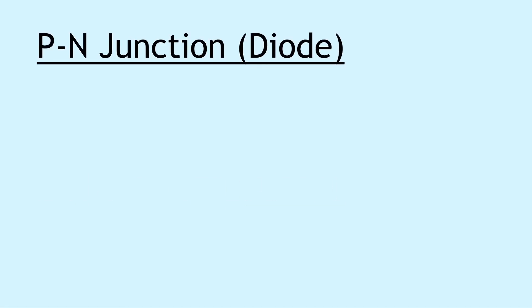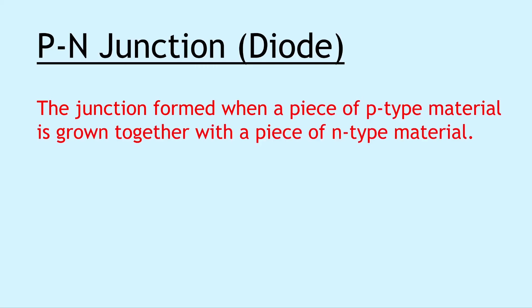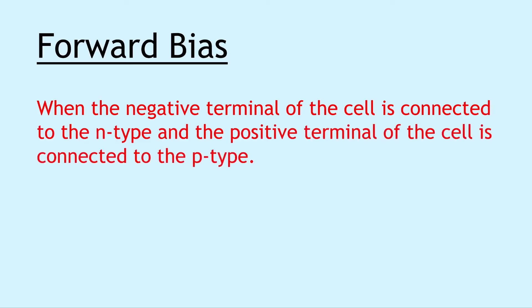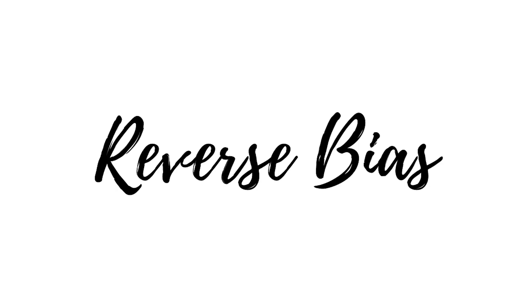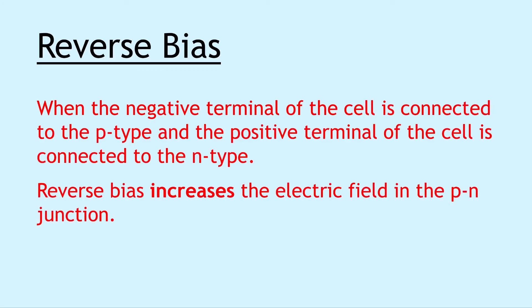Moving on we have the p-n junction diode. This is the junction formed when a piece of p-type material is grown together with a piece of n-type material. Remember a diode will only let current flow through it in one direction. P-n junctions can be connected in forward bias, which is when the negative terminal of the cell is connected to the n-type and the positive terminal of the cell is connected to the p-type. Forward bias reduces the electric field in the p-n junction and this allows the material to conduct. Reverse bias on the other hand is when the negative terminal of the cell is connected to the p-type and the positive terminal is connected to the n-type. Reverse bias increases the electric field in the p-n junction, and therefore electrons and holes cannot flow so there's no conductivity.